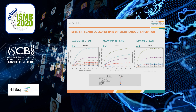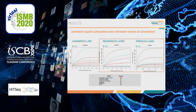Furthermore, SQANTI categories have different ratios of saturation and different biological systems show differences in the saturation of categories. For example, in the Alzheimer plot, the number of novel-in-catalog transcripts detected appears to be much higher than in melanoma and tomato, where full splice matches appear to be the predominant category. This suggests that at higher depth, more novel transcripts are captured.